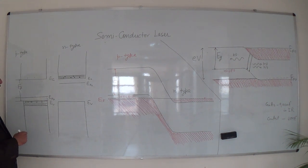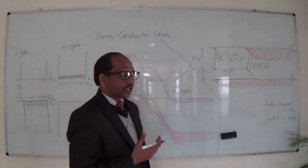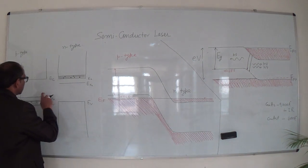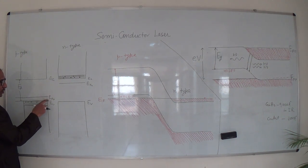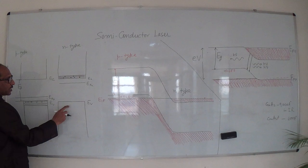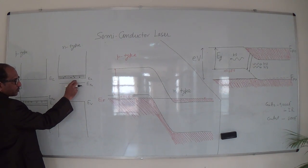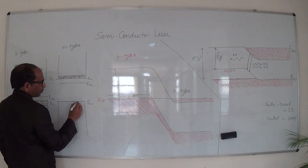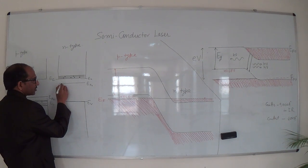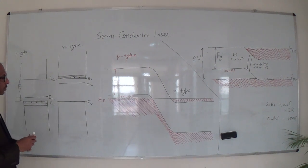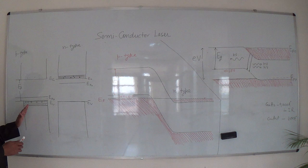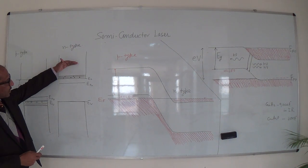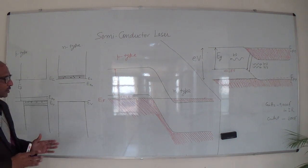The key point is where the Fermi energy level lies in P-type and N-type semiconductors. In P-type semiconductor, the Fermi energy level lies just above the valence band. In N-type semiconductor, the Fermi energy level lies just below the conduction band — just below the bottom of the conduction band. So in general, the Fermi energy level in P-type is just above the valence band and in N-type it is just below the conduction band.